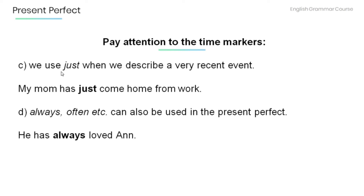We use just when we describe a very recent event. For example: My mom has just come home from work. Frequency adverbs like always, often, etc. can also be used in the present perfect, as in: He has always loved Ann.